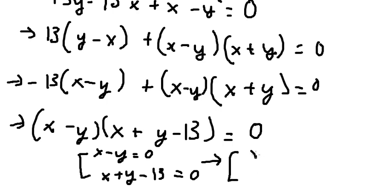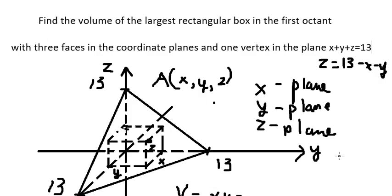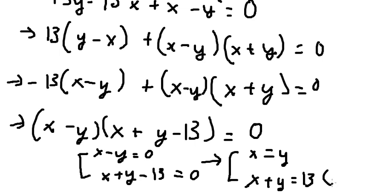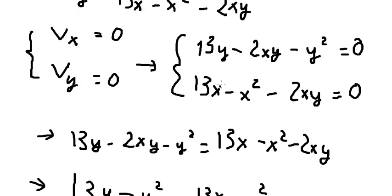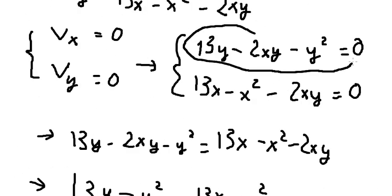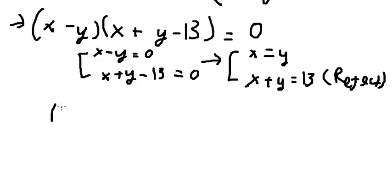From the first factor, x equals y. From the second factor, x plus y equals 13. However, if we substitute x equals y into x plus y equals 13, we get z equals 13 minus 13 equals zero, which means we cannot form a rectangular box — so we reject that solution. We then substitute x equals y back into the derivative equation.